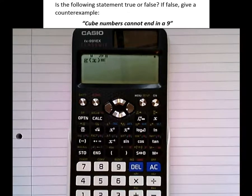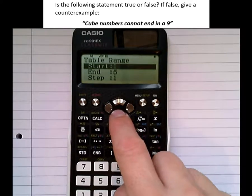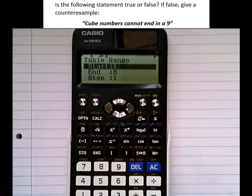We've got the option to put another function in, but we're not going to do that. We don't need that. Just leave it blank. Press equals. Let's start at 1, end at 5. Go from 1 cubed up to 5 cubed, and go up in 1s.